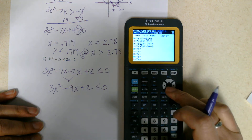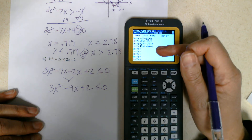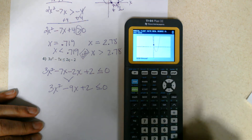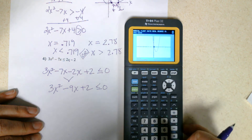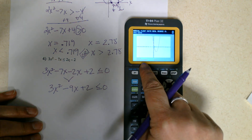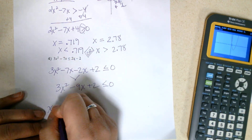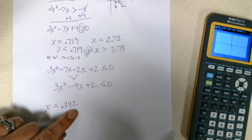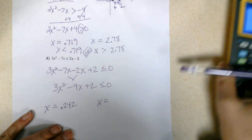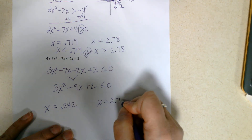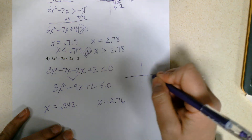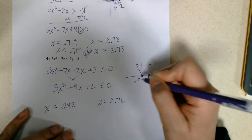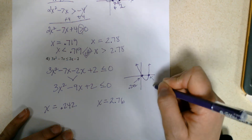Going through and finding our x-intercepts: I'm going to unselect the previous one and select 3x squared minus 9x plus 2. Now we're on the fourth example. I'll press graph, then do 2nd Trace, zero. For left bound — yes. Right bound — yes. Take a guess. I get 0.241693. I'm going to use three significant figures, so I'm at 0.242. And then I'm going to get my other intercept — it's going to be 2.76.